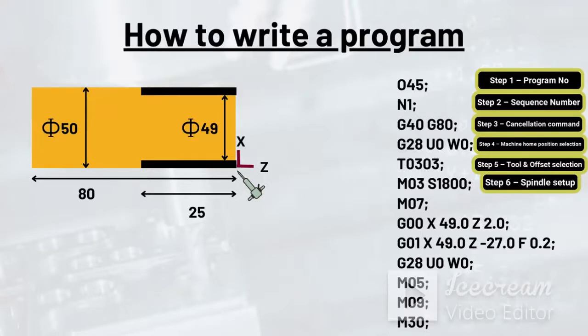As soon as spindle setup is done, machine has started operating and hence coolant is required. So in this step we are going to do the setup for coolant. We will switch on the coolant using command M07.